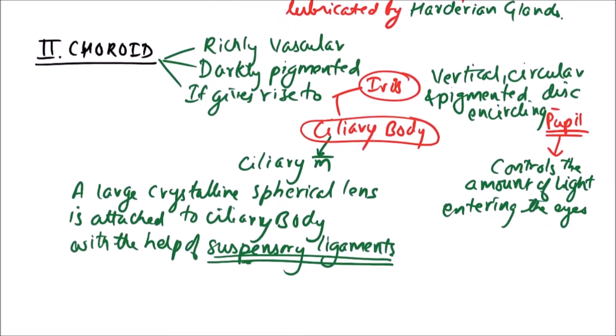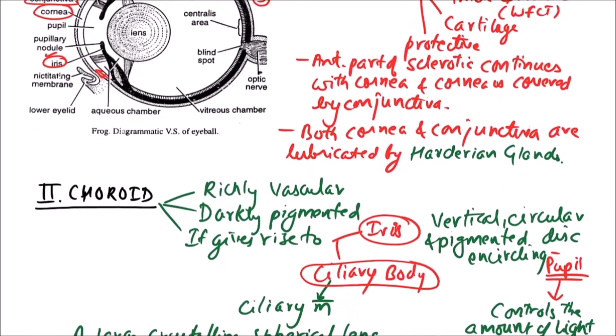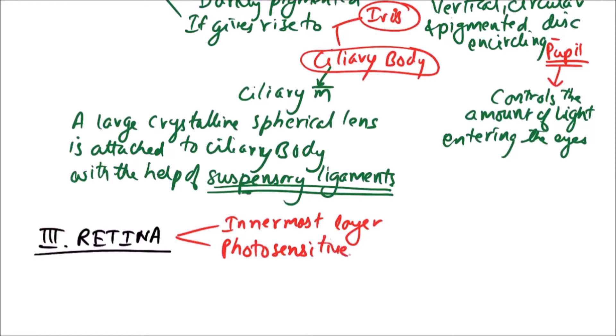The last layer which is very important is retina. The last layer or innermost layer is retina. Retina is photosensitive layer. It is innermost layer, it is photosensitive, and it is having following layers. It is also divisible into different layers.